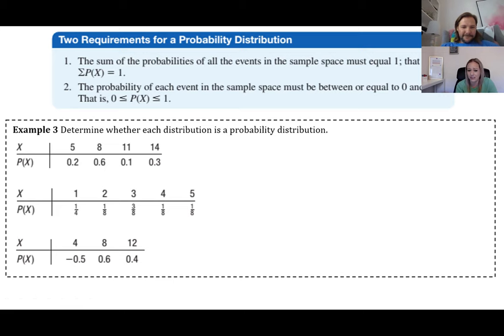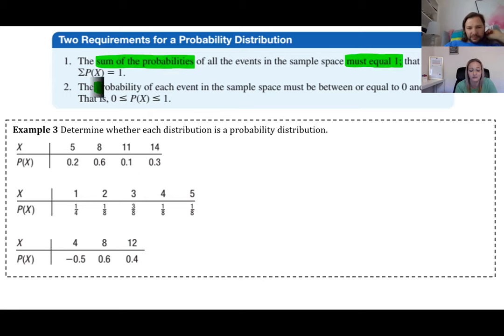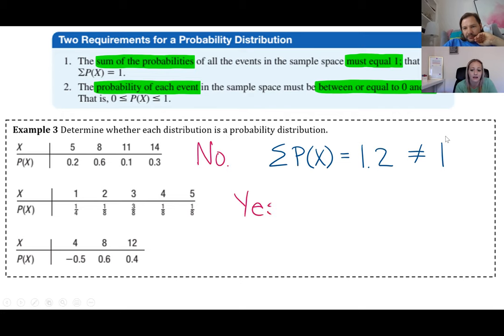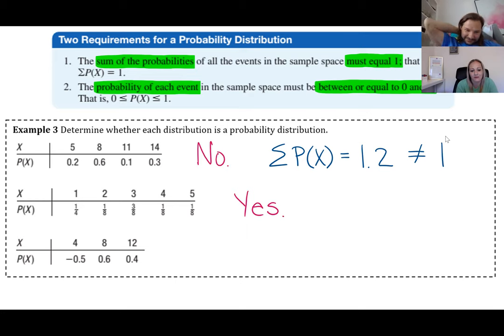For the first example, each probability is between zero and one, but 0.2 + 0.6 + 0.1 + 0.3 = 1.2, not 1. So no, that is not a probability distribution because the sum of P(x) does not equal one.